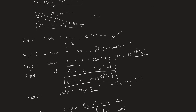In step three, we choose e, which will be used for encryption. This number e has to be less than n and it has to be relatively prime to the totient function φ(n). Then using all the information so far, we calculate d, which will be used for decryption, such that d is the inverse of e mod φ(n).